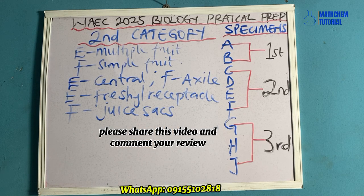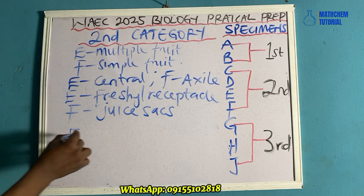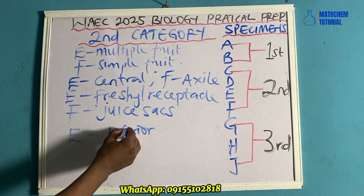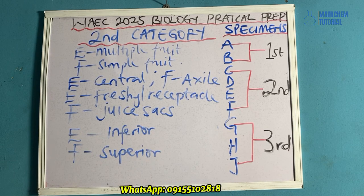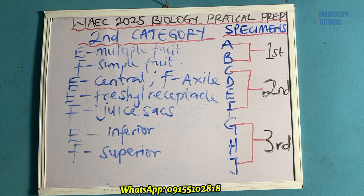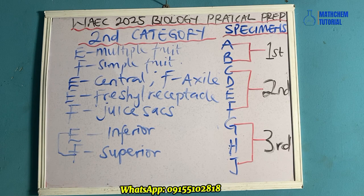For specimen F, the edible part is the juice sacs. For the type of ovary: for specimen E the type of ovary is inferior, while for specimen F it is superior. So to summarize the comparison: placenta arrangement — central for E, axile for F; edible parts — fleshy receptacle for E, juice sacs for F; ovary — inferior for E, superior for F.